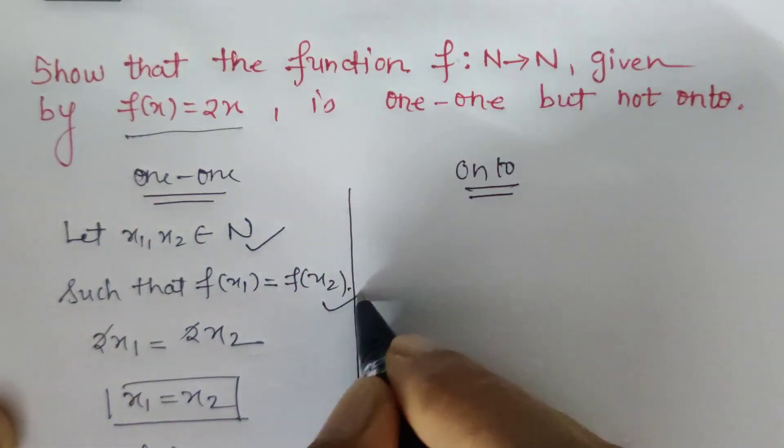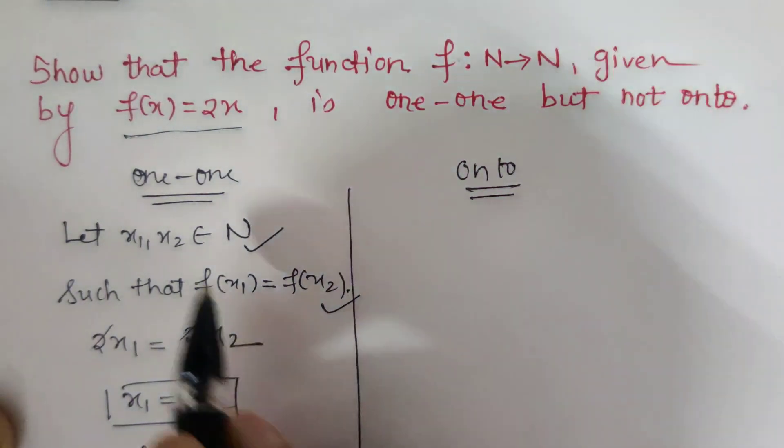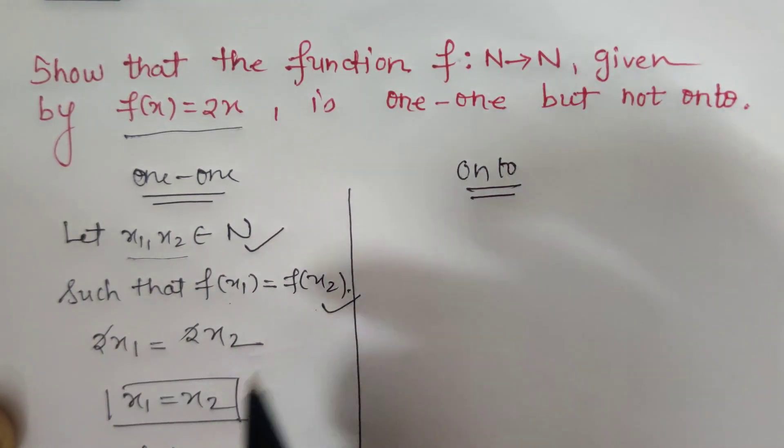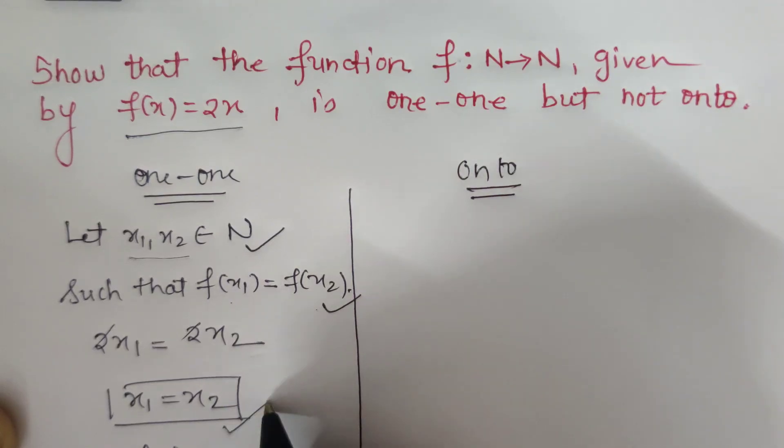These are the three-line proof for one-one: we assume two elements in domain such that fx1 equals fx2, and then if we prove x1 equals x2, then f is one-one.